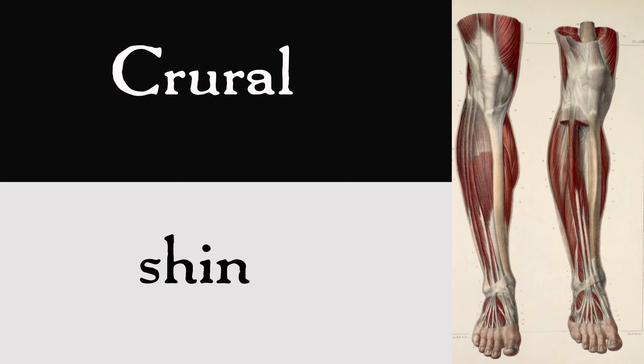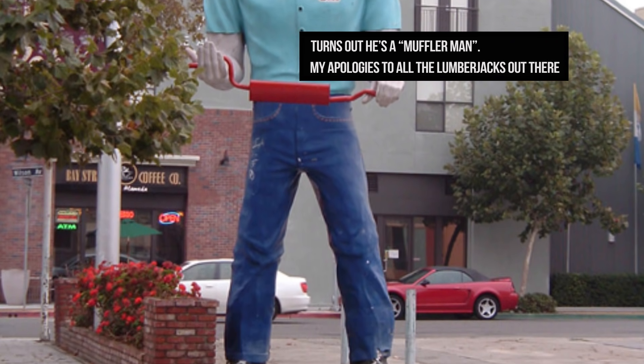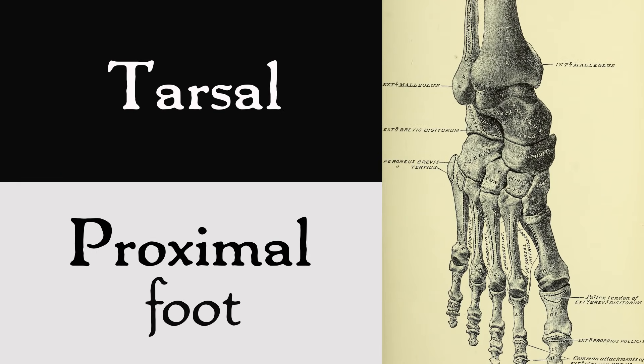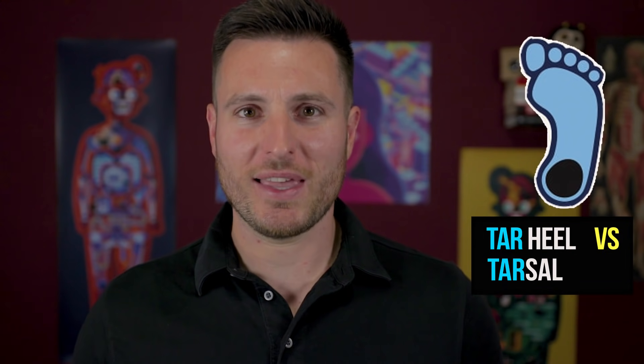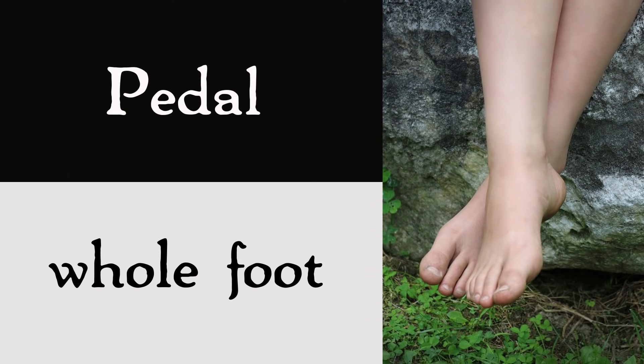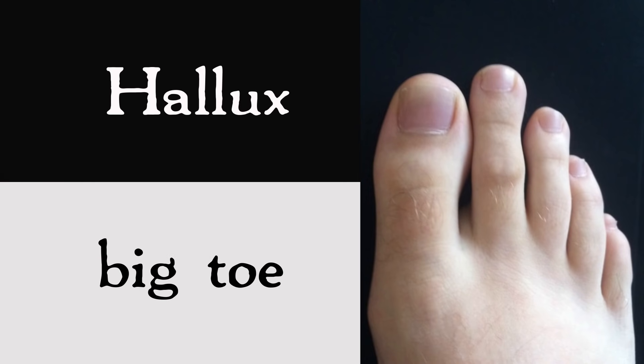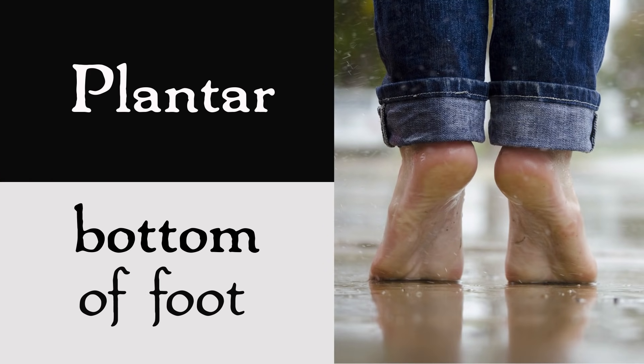The crural region means your shins. I remember this one because there's a giant lumberjack statue in my hometown with enormous shins — he probably lives in a rural area, which rhymes with crural. Your sural region is your calf muscles. The tarsal region is the top of the foot, getting into the ankle area — it's the top of the foot, not the heel. The foot itself is the pedal region — think of the prefix ped: podiatrist, pediatrician, bipedal. Your hallux is your big toe, and the plantar region is the bottom of your foot, because every time you walk, you're planting your foot on the ground.